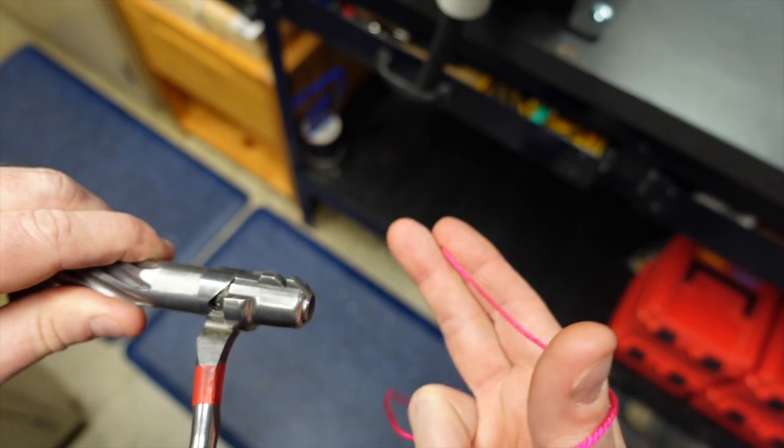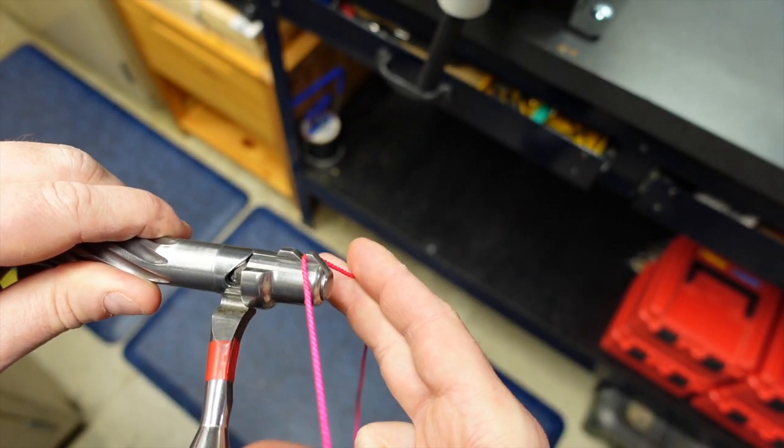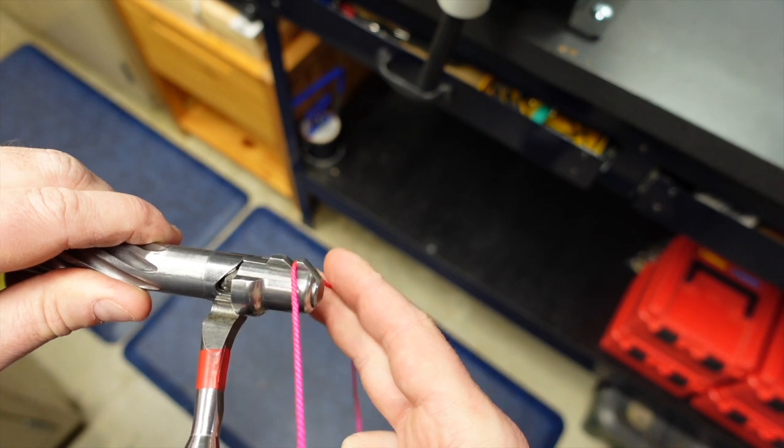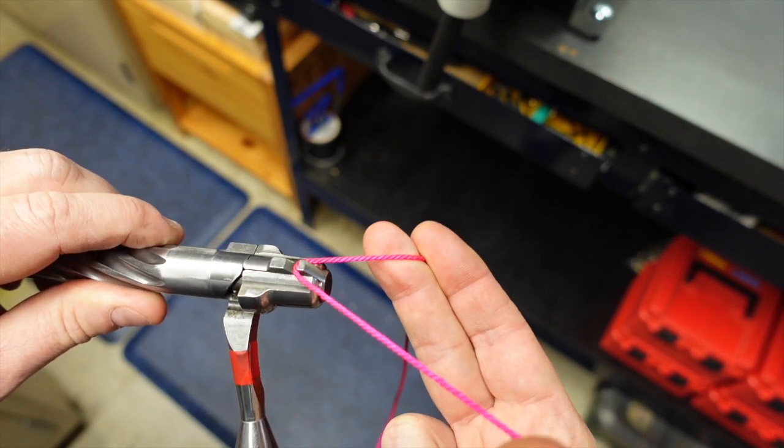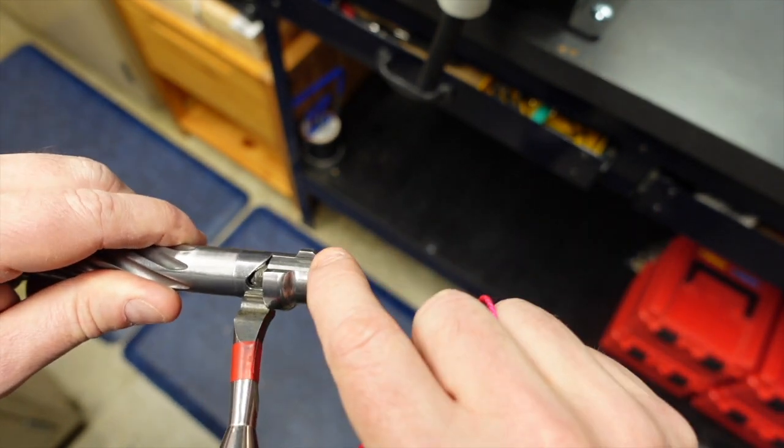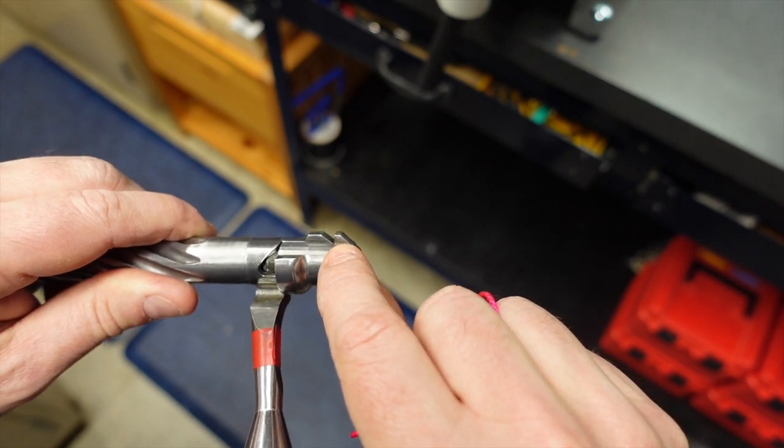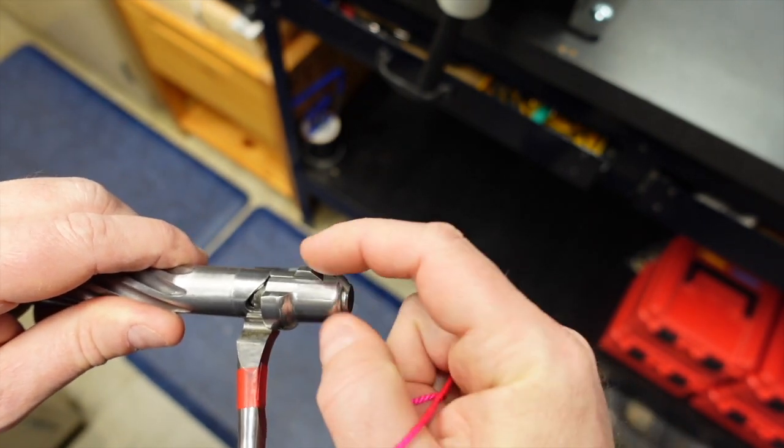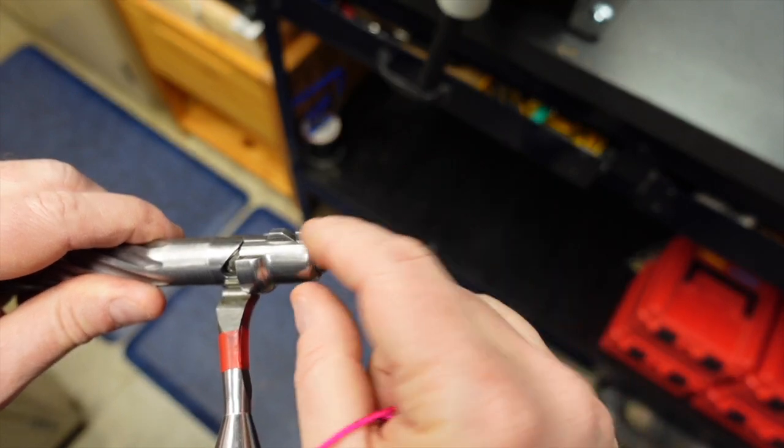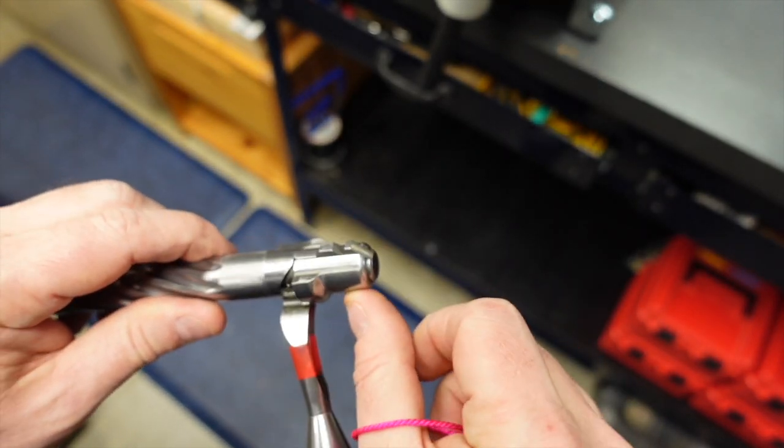And while you can use a shoelace and I've certainly seen it done, I think I've always used this string, but you can use a shoelace. But the smaller it is, the easier it is to hook over this and keep it hooked. The bigger the string or shoelace is, the more chance it'll pop off while you're trying to pull.